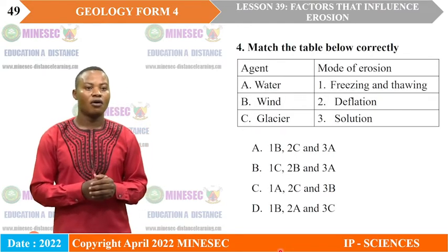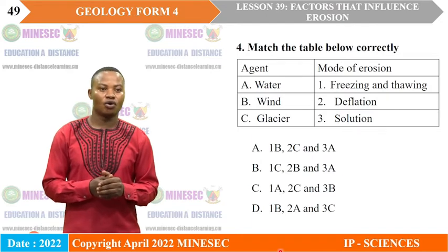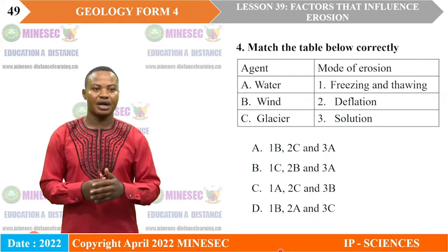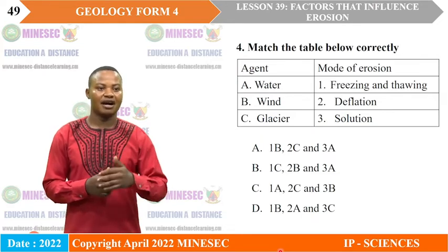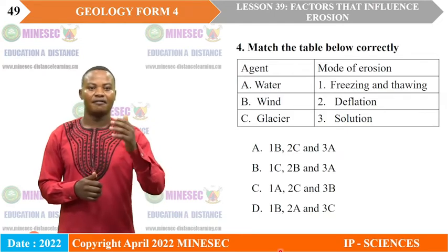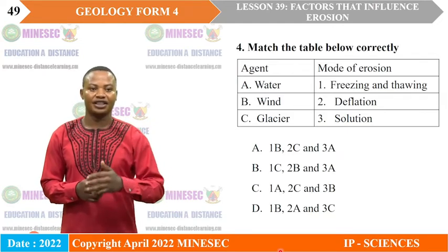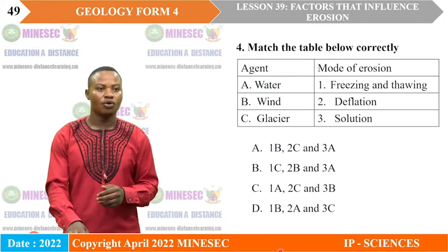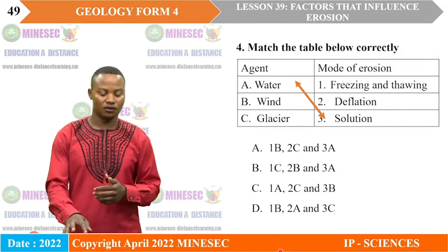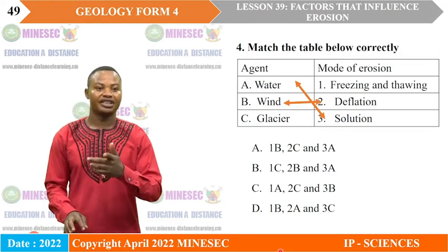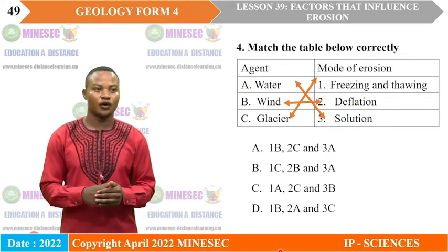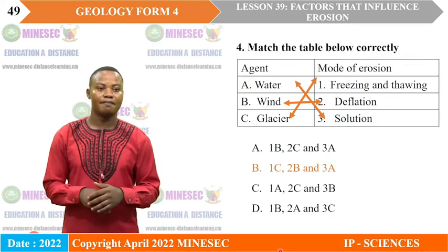Exercise 4: Match the agent with its mode of erosion. Agent A — water; B — wind; C — glacier. Modes: freezing and thawing, deflation, and solution. We can match water with solution, wind with deflation, and glacier with freezing and thawing. The correct answer is B.